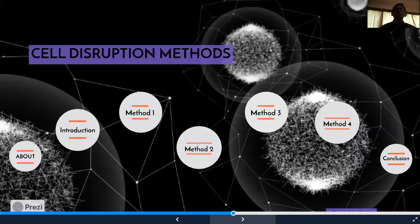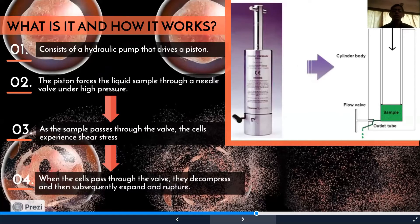French press uses a piston that forces a liquid sample through a needle valve under high pressure. As the sample passes through the valve, the cells experience shear stress. When the cells pass through the valve, they decompress and cell membranes rupture.